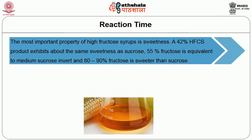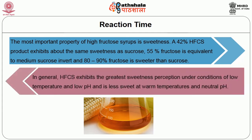The most important property of high fructose corn syrup is sweetness. A 42% HFCS product exhibits about the same sweetness as sucrose. 55% fructose is equivalent to medium sucrose invert, and 80 to 90% fructose is sweeter than sucrose. In general, HFCS exhibits the greatest sweetness perception under conditions of low temperature and low pH, and is less sweet at warm temperatures and neutral pH.